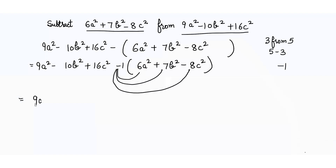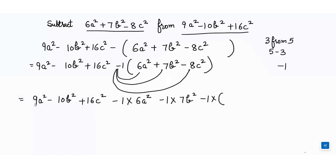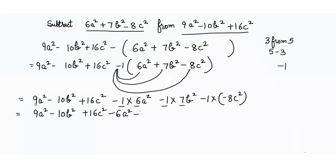When we open the bracket, we multiply negative 1 by all the terms inside. So: 9a² - 10b² + 16c², then -1 × 6a², -1 × 7b², and -1 × (-8c²). Since -1 × -8 is positive 8, that term becomes +8c².